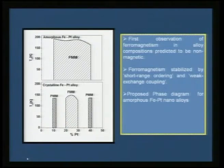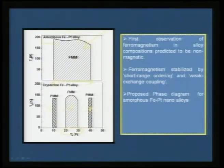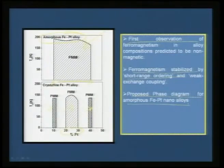Iron-platinum nano alloys have the potential to turn magnetic against equilibrium phase diagram predictions due to the influence of sonochemistry, allowing us to propose a new phase diagram for amorphous alloys. While the crystalline alloy shows paramagnetic-ferromagnetic-paramagnetic transitions, our study shows the entire region from 10 to 40 percent platinum is ferromagnetic. This is the first observation of ferromagnetism in alloy compositions predicted to be non-magnetic—stabilized by short-range ordering and weak exchange coupling.